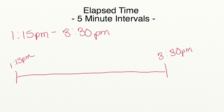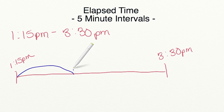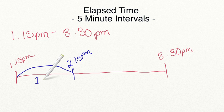The first thing we're going to do is block out hours — how many full hours are there between 1:15 and 3:30? From 1:15 to 2:15 is one hour. I'm going to write in 2:15 PM to stay organized, and label that we moved one hour.